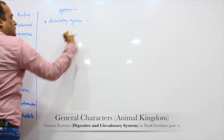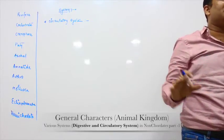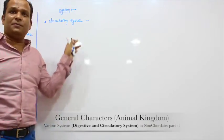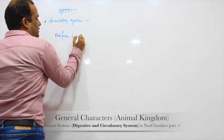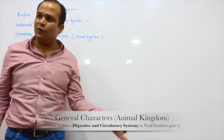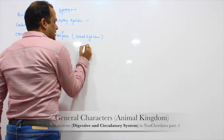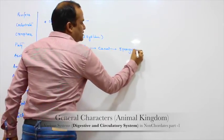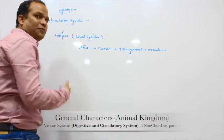Now, what is the meaning of the circulatory system? We are going to start from Platyhelminthes or Aschelminthes in real, but before that we will use the terminology. In Porifera, it is a canal system which works as circulation — ostia, canals, spongocoel, and osculum form the canal system of Porifera.